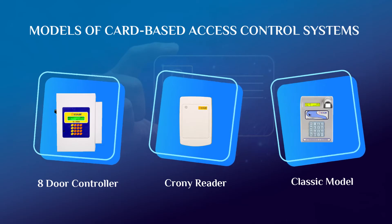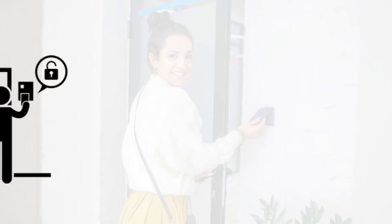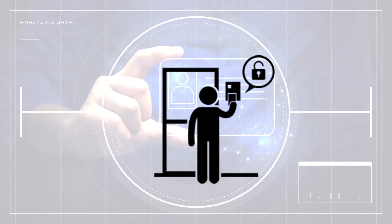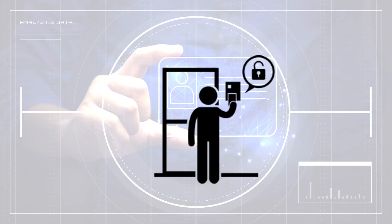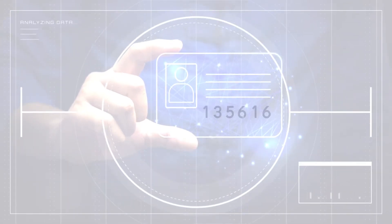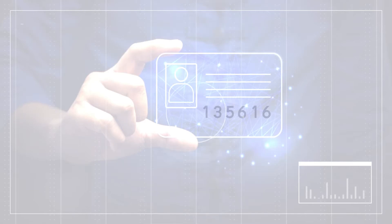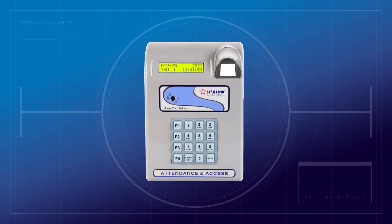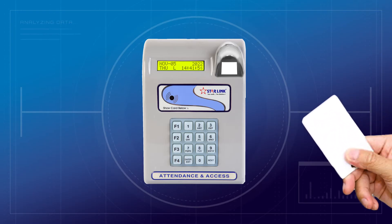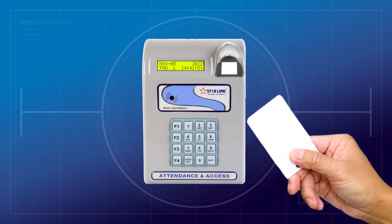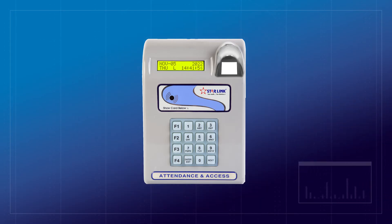Let's start by understanding the fundamental components of a card-based access control system. In this system, employees are provided with cards, each containing a unique alphanumeric code. These codes, often corresponding to the employee's registration, are essential for gaining entry. The cards are swiped on a biometric machine to activate the door mechanism.